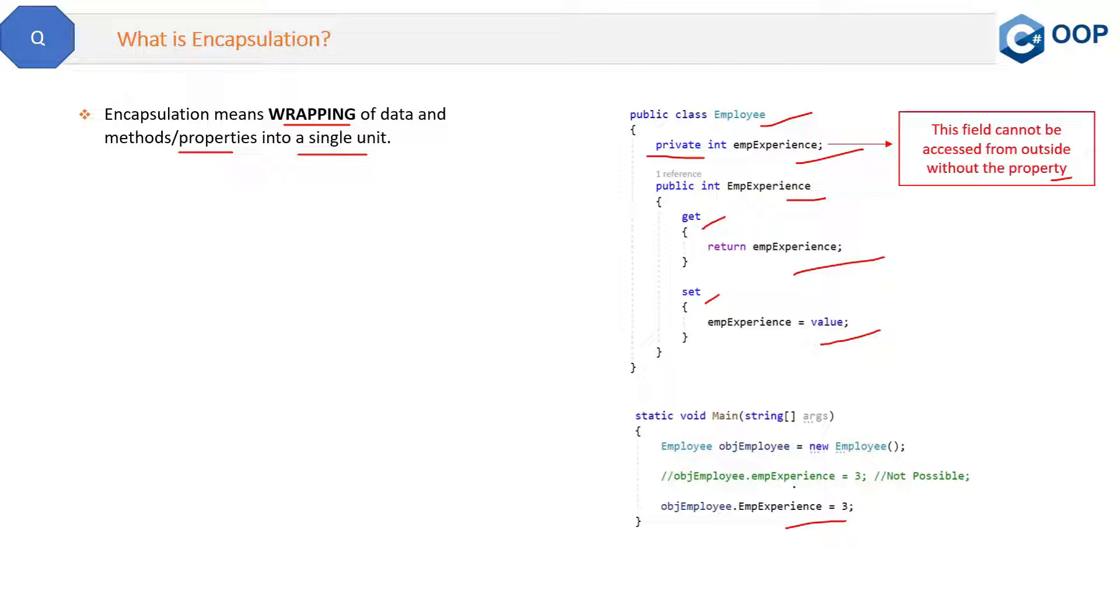Via the property we will set the value of the field. And why are we not directly accessing the field? Rather we are accessing it by the property. So that is what is encapsulation, because this field or data is a very secure thing.